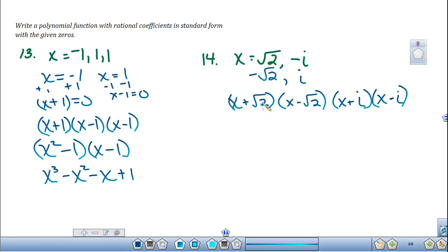So I'm going to start with these two right here. It's in the form a plus b, a minus b, which multiplies out to equal a squared minus b squared. So I'm going to get x squared minus the square root of 4, which is going to give me 2. So that's my first factor.